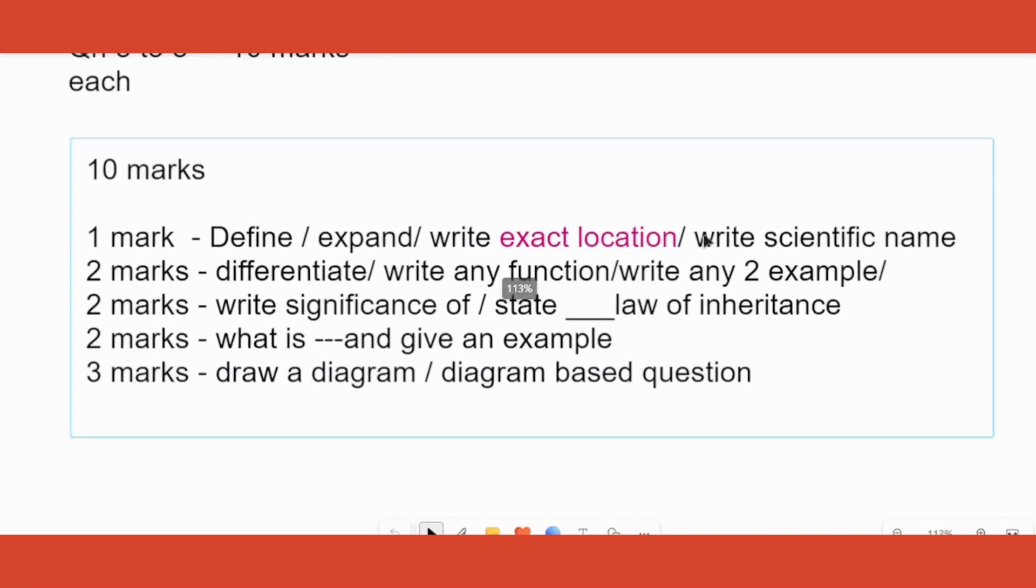Two marker questions can be any of this: differentiate between this term and that term, write any one function or two functions, write two examples of a particular concept, significance of a particular concept, state the law of inheritance - any Mendel's law can be asked. Usually their favorite is independent assortment. What is astigmatism? Give one example of a particular concept. Such questions can come for two marks.